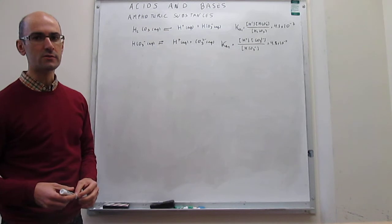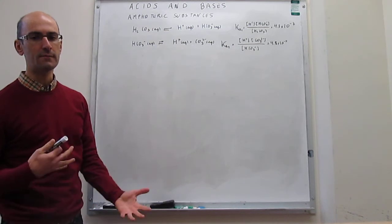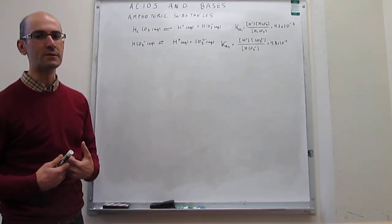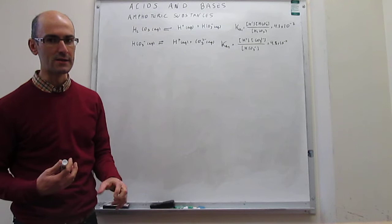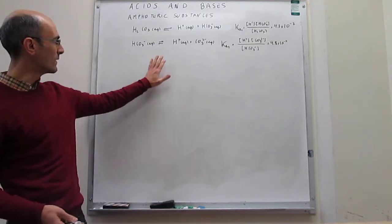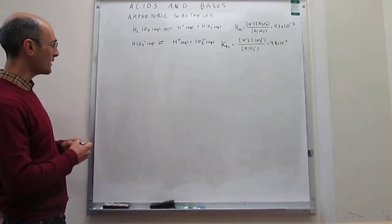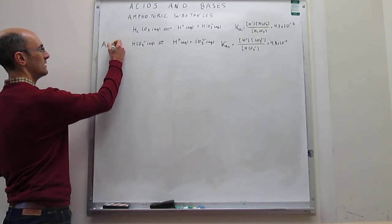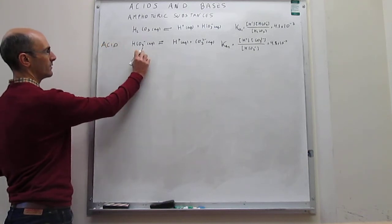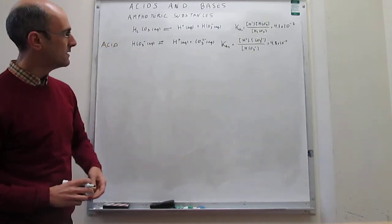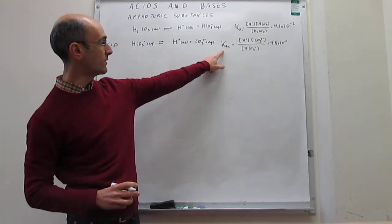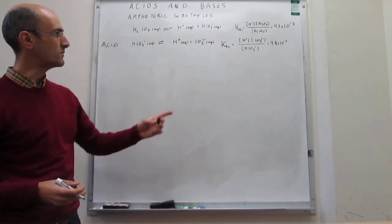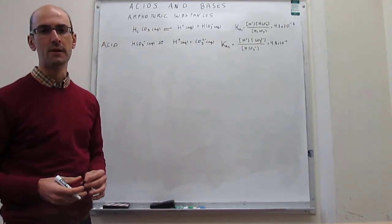In this video we ask about the acid-base properties of bicarbonate. The acid properties are already captured here — in this second equilibrium of carbonic acid, you have bicarbonate acting as an acid. We actually have the equilibrium constant for that process: Ka2, which is 4.8×10⁻¹¹.